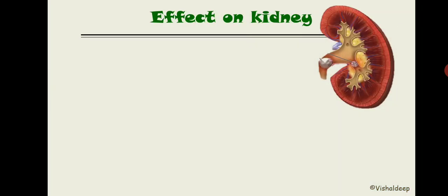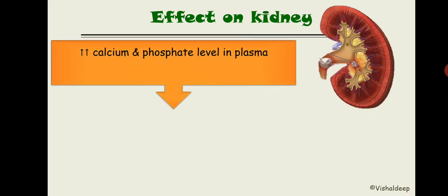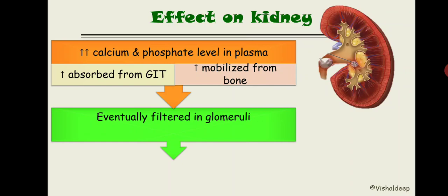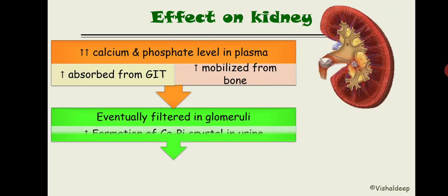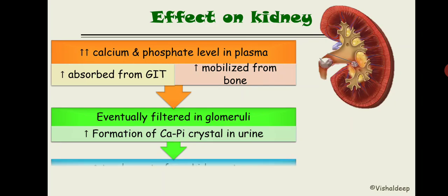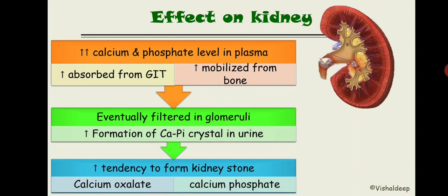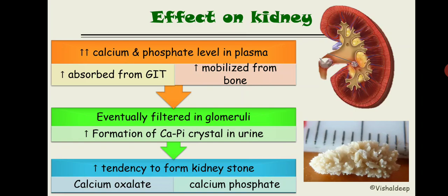Effect on kidney: more calcium and phosphate in plasma from increased GIT absorption via vitamin D and bone mobilization. These filtered in the kidney lead to increased calcium phosphate crystals in urine — renal stones. Two types form: calcium oxalate and calcium phosphate. Acidotic diet and drugs are used to treat renal calculi.